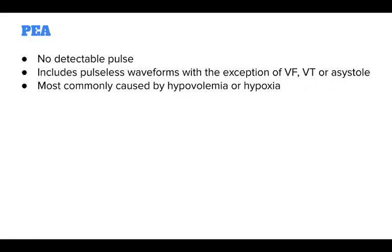PEA is one of many waveforms seen on the ECG, including sinus rhythm, without a detectable pulse. PEA may include any pulseless waveform with the exception of VF, VT, or asystole.